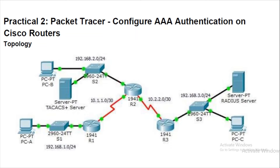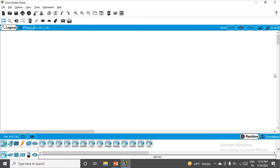So this is the configuration they have given: three routers with serial connections between them. On the left hand side we have switches, servers, and PCs. Similarly on the right hand side we have one PC and one server. Apart from that we'll also be using some advanced protocols, also known as RADIUS and TACACS. We'll be discussing about those in the later part.